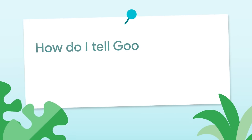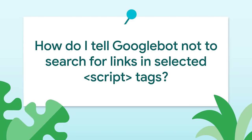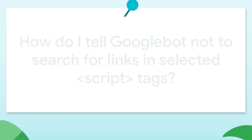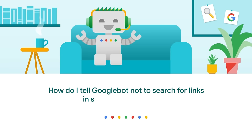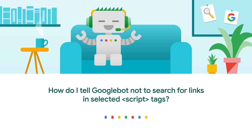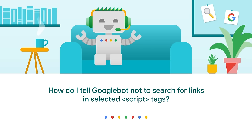Mateusz is asking: how to tell Googlebot not to search for links in selected script tags for JSON or JavaScript? Consider disallowing crawling on these URLs that you don't want crawled, clearly in your robots.txt file. Googlebot does not make a request to it, it doesn't see the content, and thus not any URLs that it might consider for crawling later on.